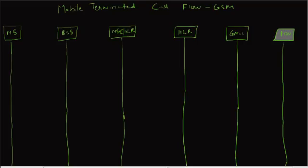In this tutorial, let's look at the mobile terminated call flow scenario. We'll assume that mobile MS has already been registered in a particular PLMN, MSC, VLR, and is allocated a TMSI.